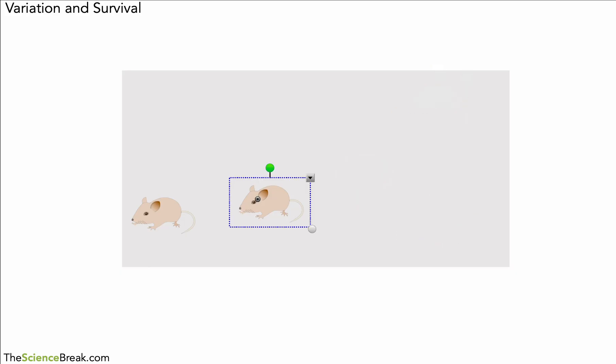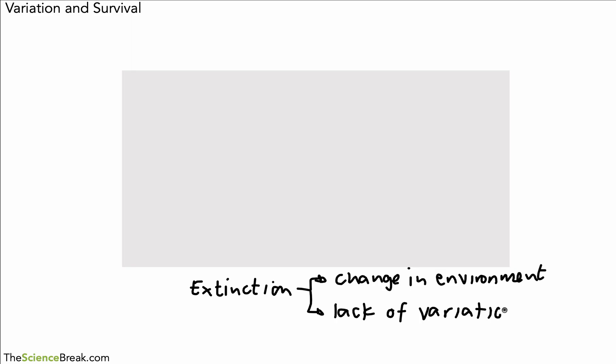We now have what's called extinction, and this extinction has happened for two reasons: one, a change in the environment, but also because there was a lack of variation in the species. The whole species was lost because there was not variation. You can imagine that if some of the mice in that population were a light gray color, they would have survived and been able to continue the species. But in this case, the change in environment caused extinction.